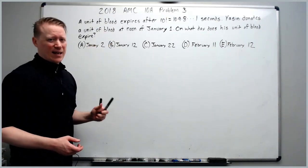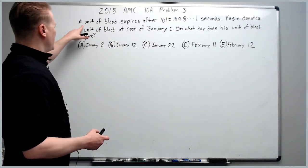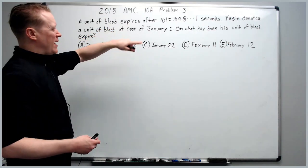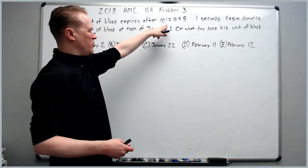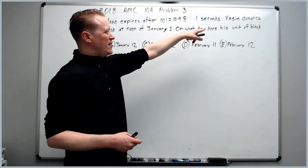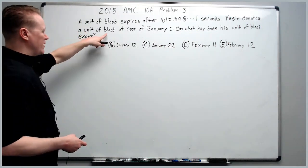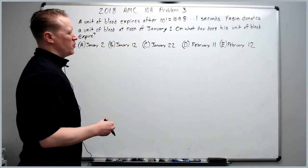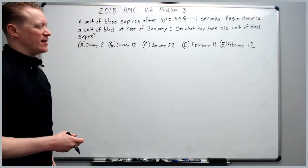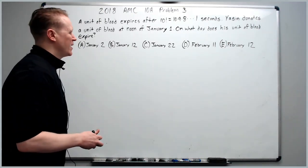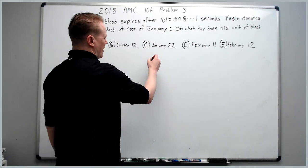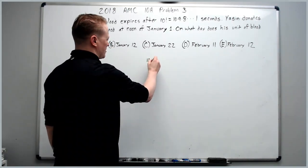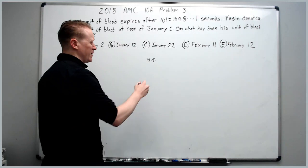A unit of blood expires after 10 factorial seconds. Yassine donates a unit of blood at noon of January 1st. On what day does his unit of blood expire? Okay, so you want to get started. This is the number of seconds. Don't calculate 10 factorial. That would be ridiculous.